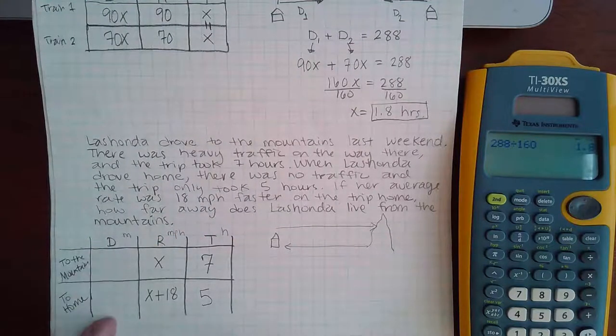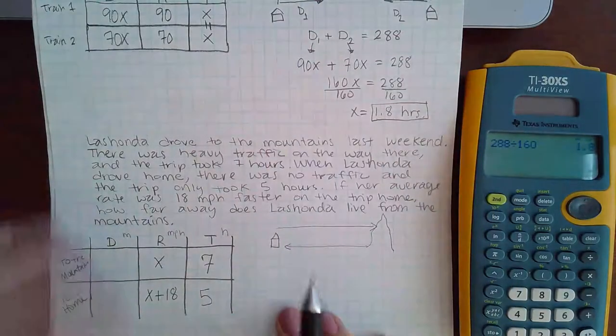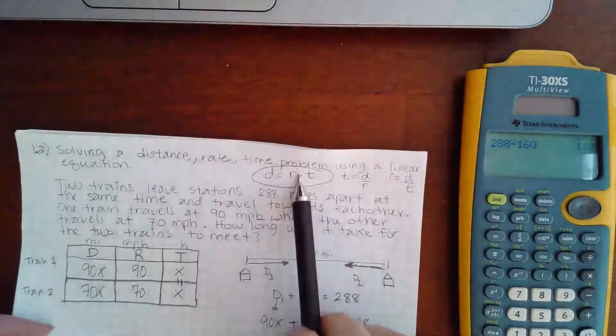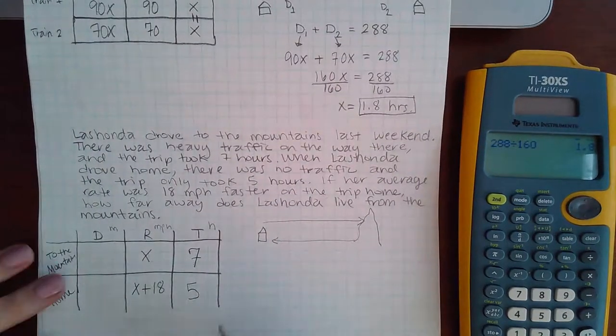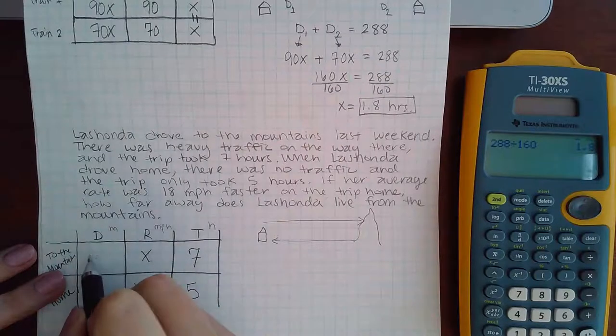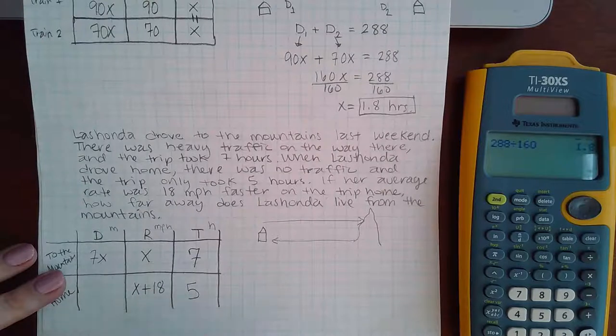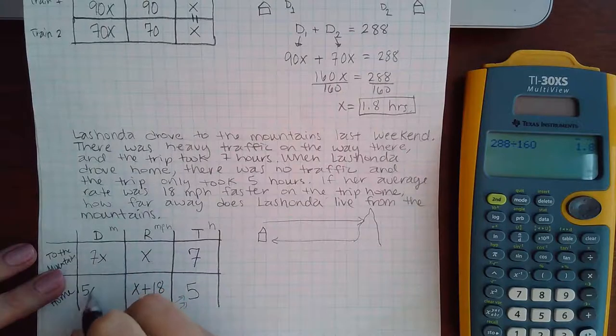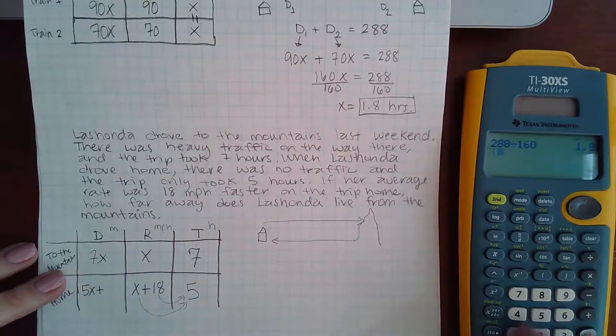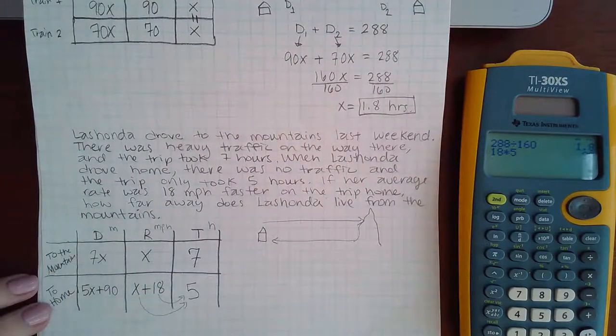Since the only box that I'm missing is distance, then I'm going to use that top equation that we had again to figure out how to calculate distance. So if I multiply this, X times 7, I get 7X. If I multiply a binomial times a monomial, each term has to get multiplied by 5, so I end up with 5X plus 90.